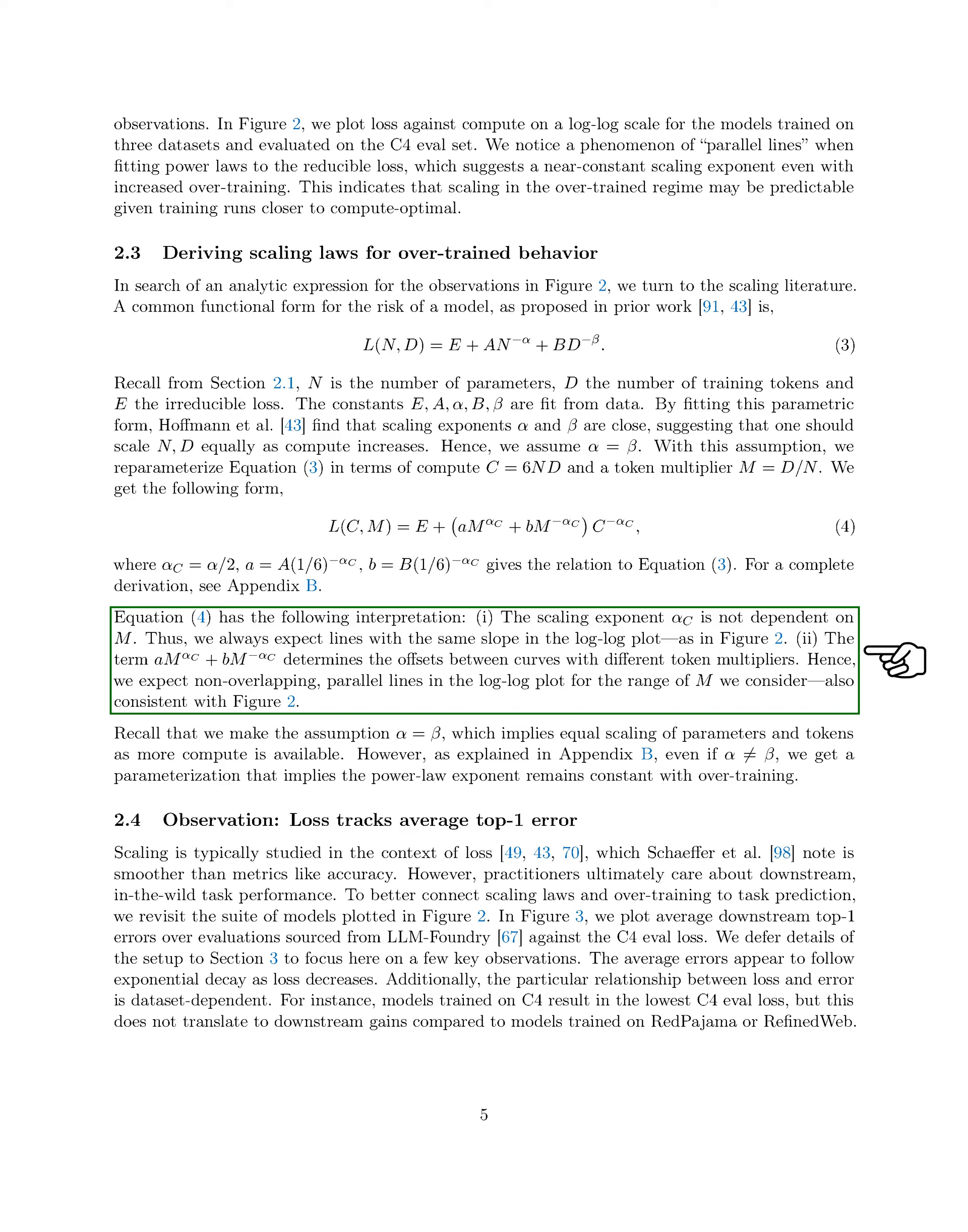The interpretation of the equation reveals that the scaling exponent alpha_c is independent of m, leading to lines with the same slope in a log-log plot. The term m^alpha_c plus b*m^alpha_c determines the offsets between curves with different token multipliers, resulting in non-overlapping parallel lines in a log-log plot for the range of m considered.